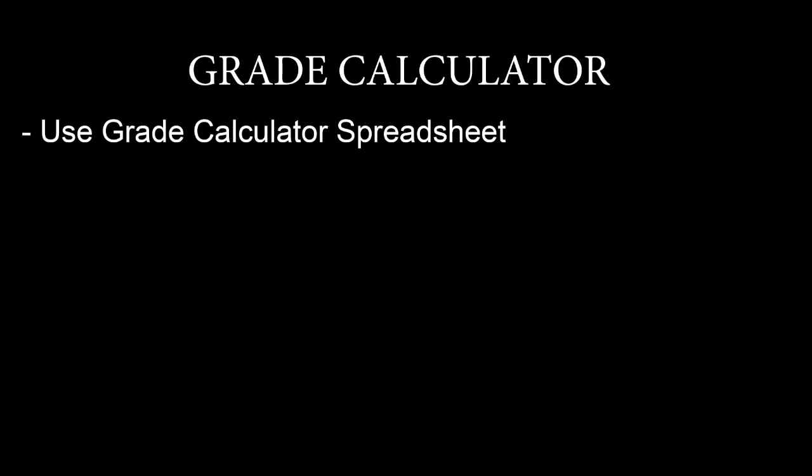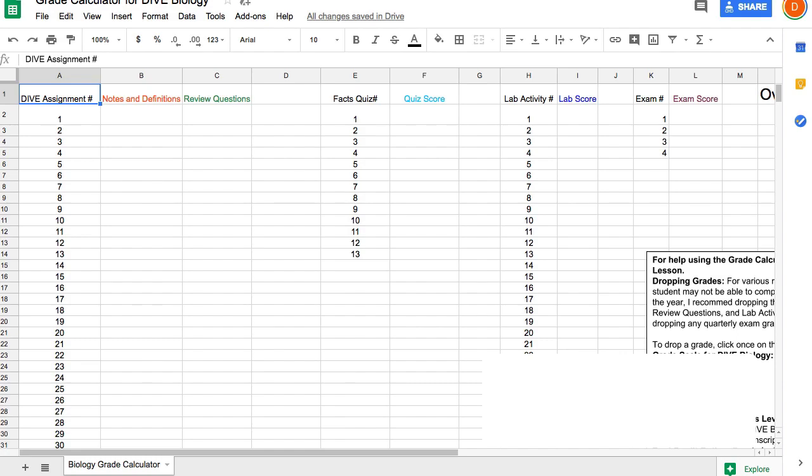Well, we've talked about every gradable thing now in Dive Science. And so let's talk about the grade calculator to calculate your overall average. And there's a grade calculator spreadsheet in your CD or download version, whichever you have. So there's different ways to open that up. Microsoft Excel, Apple Numbers, Google Sheets like it is right here.